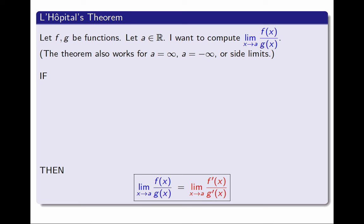Now, what are the conditions for this theorem to work? The most important one, I wouldn't put it first, but it's the most important one, is that this only works when the limit I'm trying to compute, the limit of f over g, is an indeterminate form of type 0 divided by 0, or plus or minus infinity divided by plus or minus infinity.